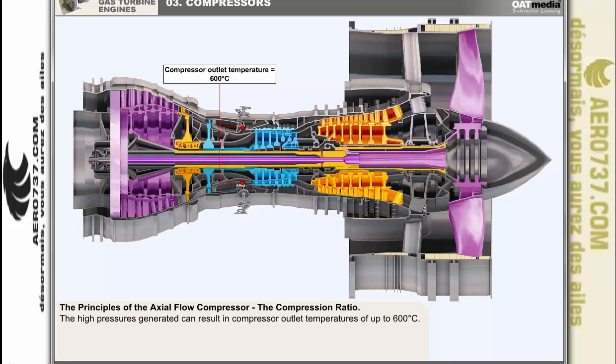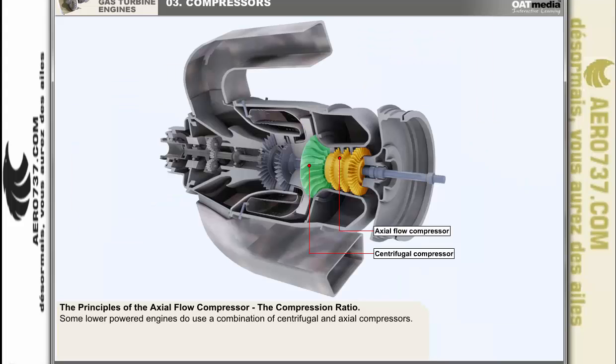Although we have only shown engines which have just centrifugal or axial flow compressors, some lower powered engines do use a combination of centrifugal and axial compressors.